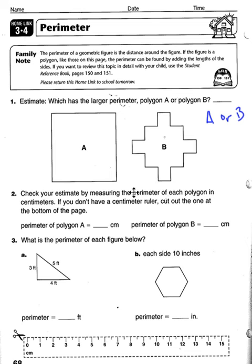Check your estimate by measuring the perimeter of each polygon in centimeters. If you don't have a centimeter ruler, cut out the one at the bottom of this page. If the students don't have one, they can cut the centimeter ruler out here.